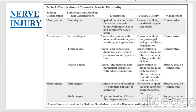In the third type of Seddon classification, neurotmesis, the fifth and sixth degree of Sunderland classification are included. In fifth degree, complete nerve disruption is present. In sixth degree, any combination of first through fifth degree may be included. In both cases, there is no chance of spontaneous recovery, and surgery is usually considered.